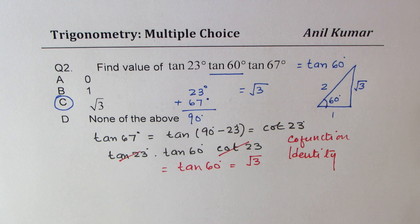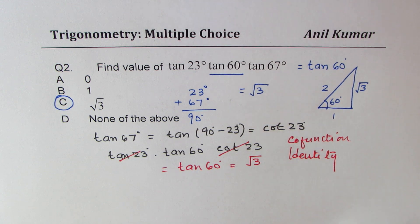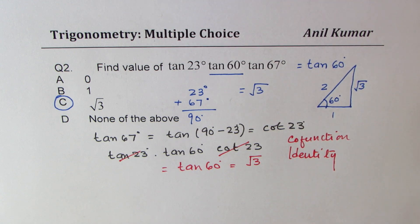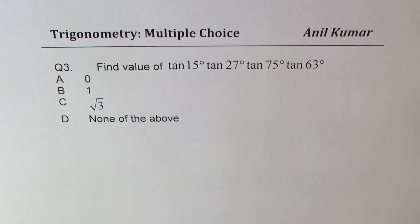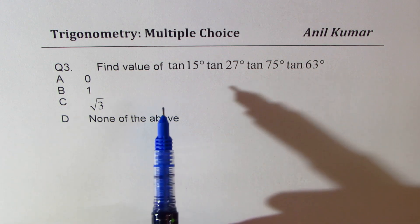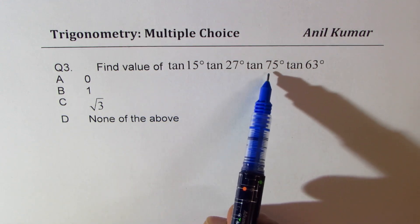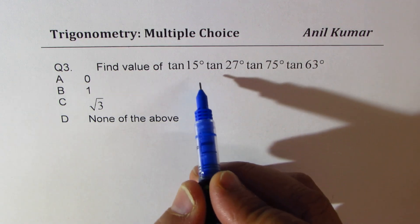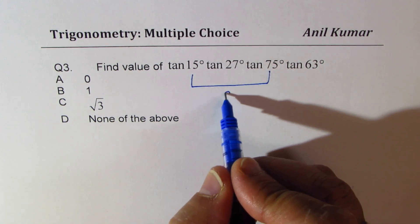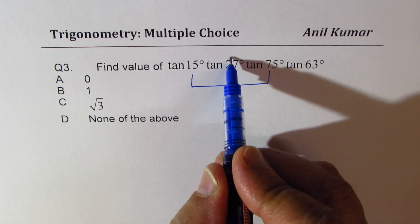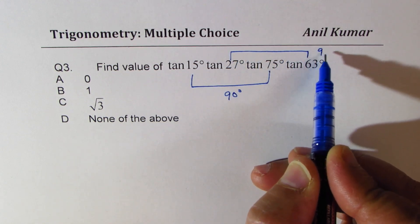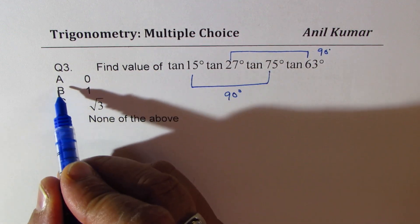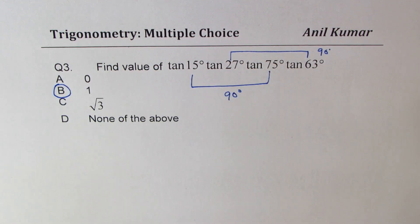So this is another way of looking into the same formula. So let's look into example 3, which is find the value. This time, tan 15, 27, 75, and 63. Now, you can combine these two. So that gives you sum as 90 degrees. And this also gives you sum of 90 degrees. So we get 1 times 1. So the answer is B for us. Perfect. So it is that simple. So I hope with this, you can easily answer similar concepts.